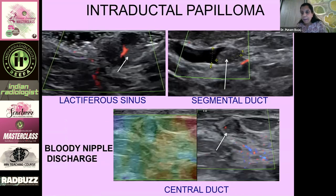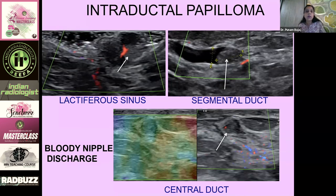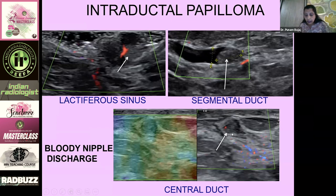Intraductal papilloma can give bloody nipple discharge during pregnancy or lactation. Papillomas can occur in any part of the ductal tree and need to be looked at very carefully with a lot of gel and high-resolution probes — in the lactiferous sinus, a segmental duct, and a central duct.